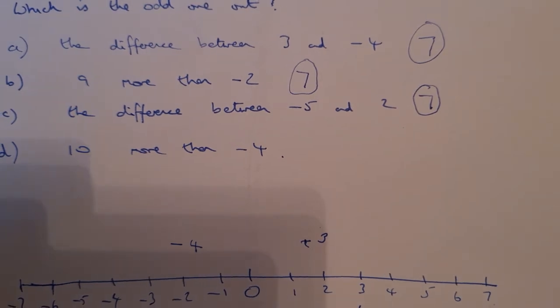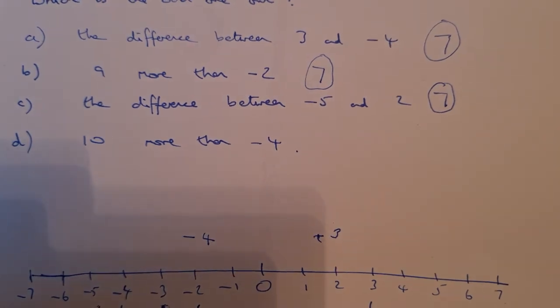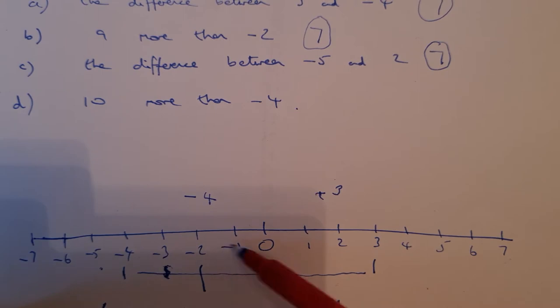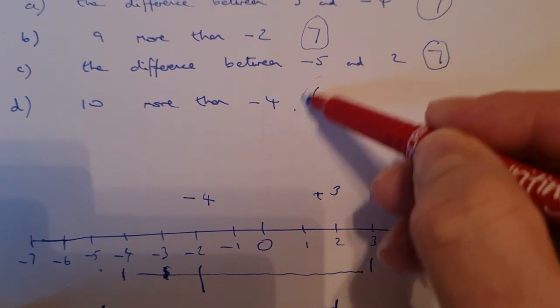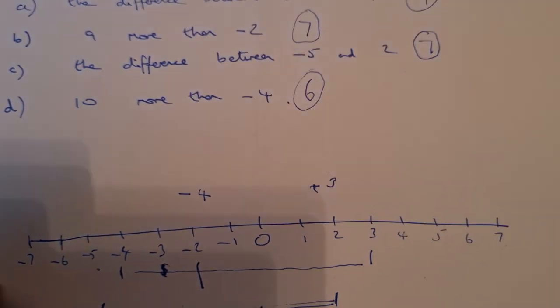So now I know that the last one is going to be the odd one out, but I need to prove that. 10 more than minus 4. Here is minus 4. I'm going to add 10 to it, so I'm moving to the right because my numbers get bigger. 1, 2, 3, 4, 5, 6, 7, 8, 9, 10. So that one is 6. So D is the odd one out.